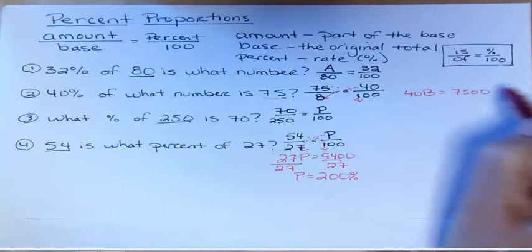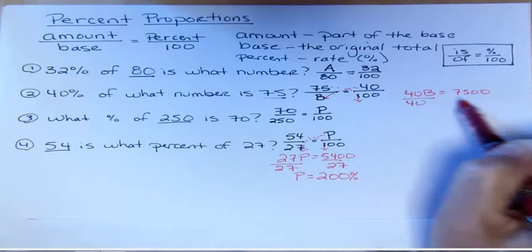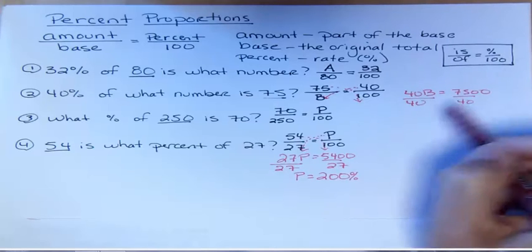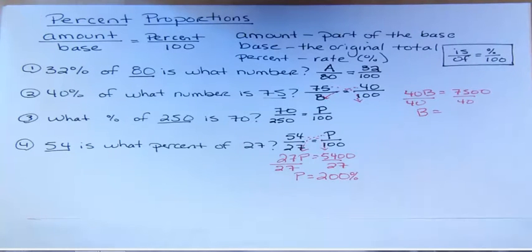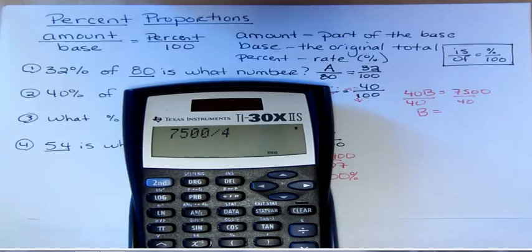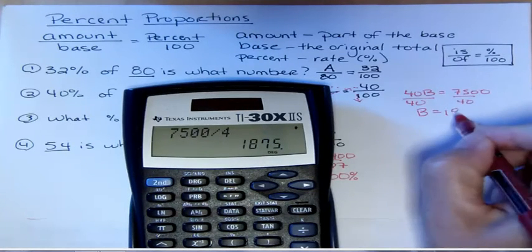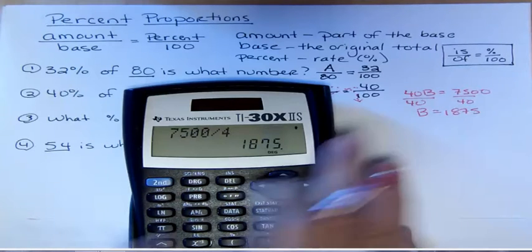I cross multiply, and the next step is to divide both sides by the coefficient. So I'm going to divide 7500 by 40, and that gives me 187.5. The base number, the original number, was 187.5. 75 is 40 percent of that number.